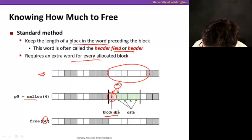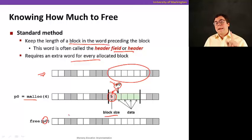So now I know that there's a word preceding the pointer where the data is. I know that the immediate word always contains the block size, so I know how much to free. So when I call free, I'm going to call free passing P0, which is right here, and I know that the previous word contains the block size, so I know what to free. Pretty simple.